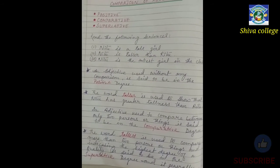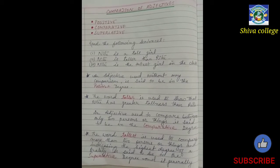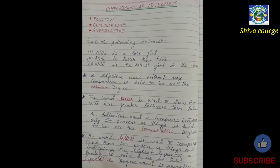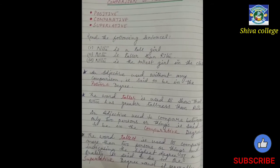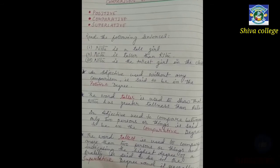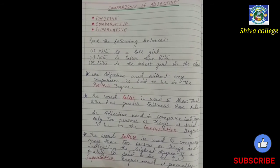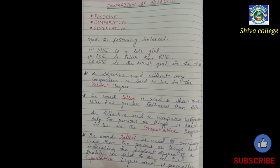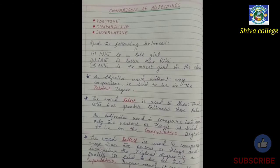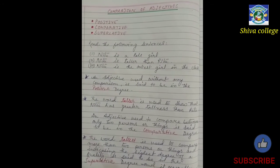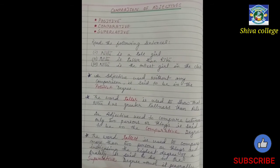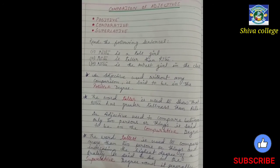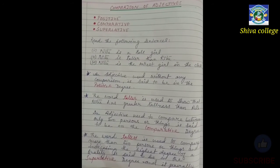The word 'taller' is used to show that Nitu has greater tallness than Rita — she is being compared to Rita in respect of height. An adjective used to compare between only two persons or things is said to be in the comparative degree. We use the comparative degree only when we are taking two things into comparison.